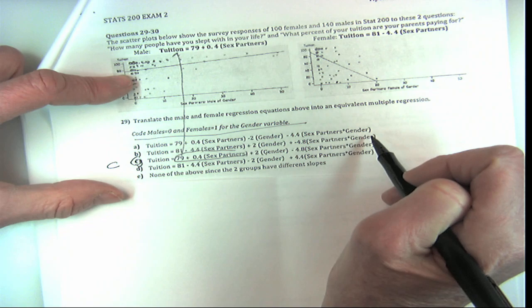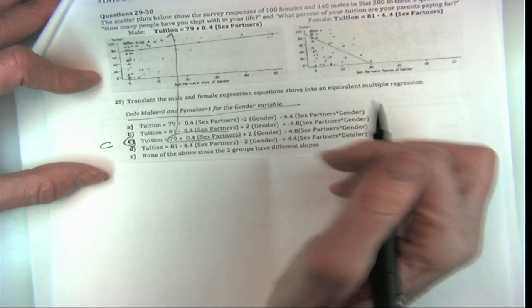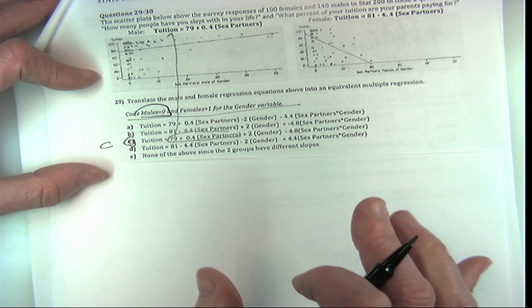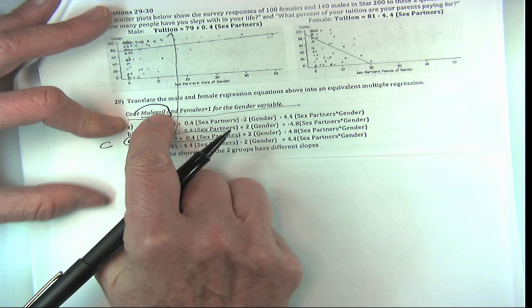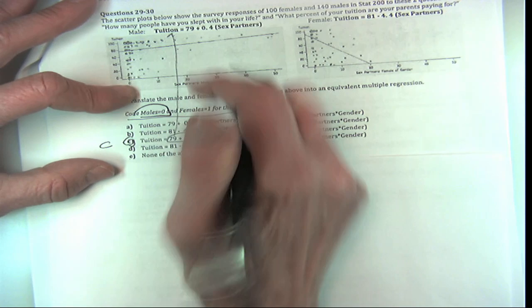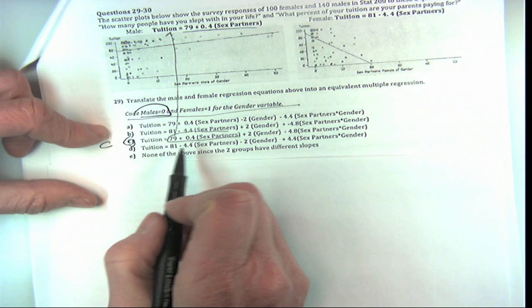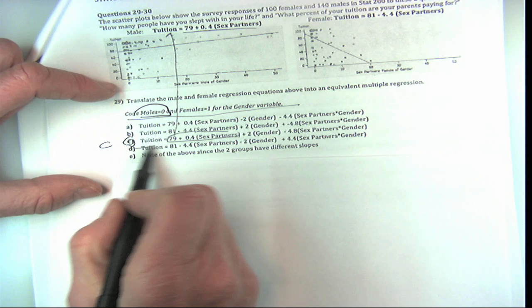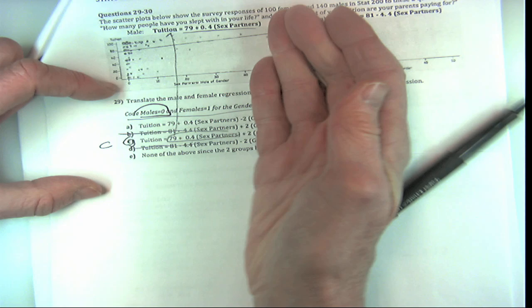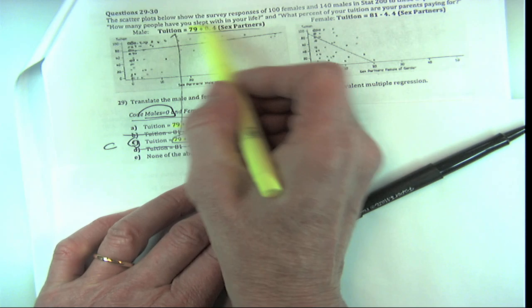So how are we going to do this? Males are coded as zero—you have to focus on whichever one is coded as zero. You look for the male plot, and when gender is zero, the gender and interaction terms all drop out, so you're left with just the intercept and slope for males. You match those first. Then you just have to decide between the last two options.